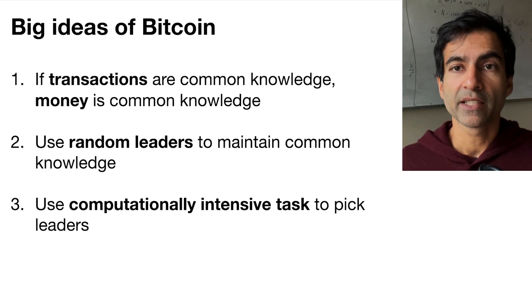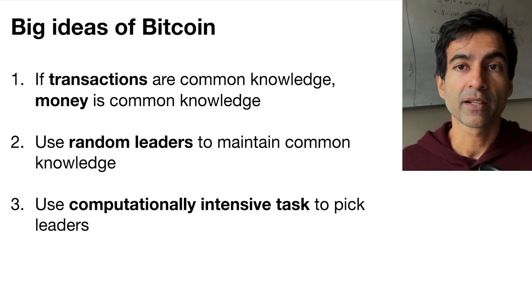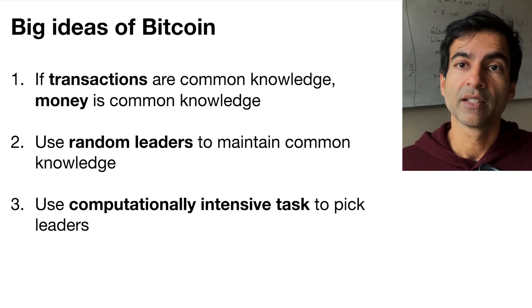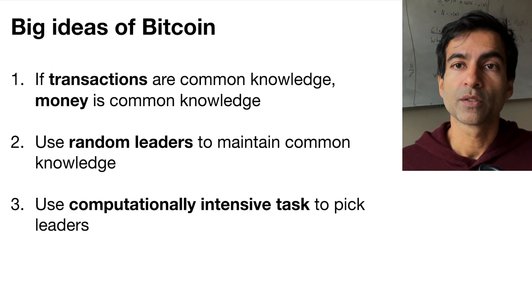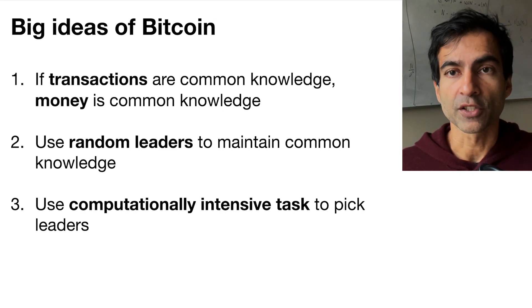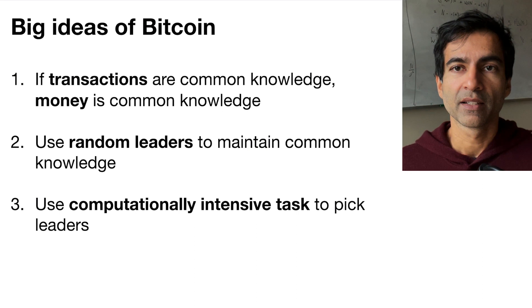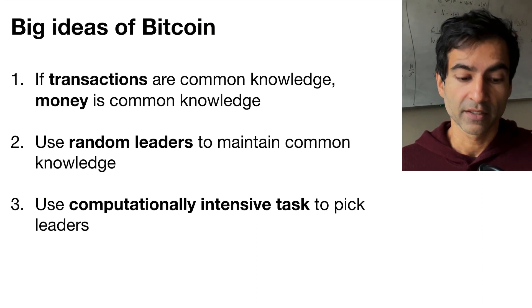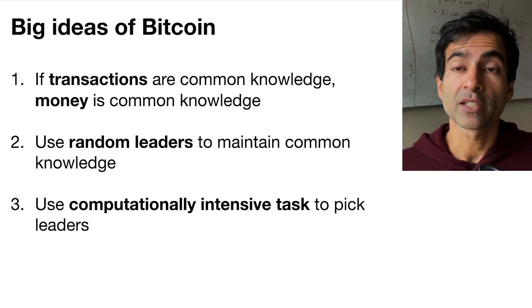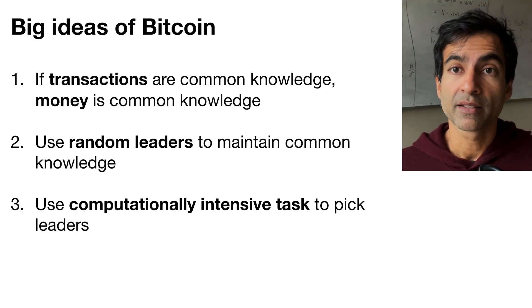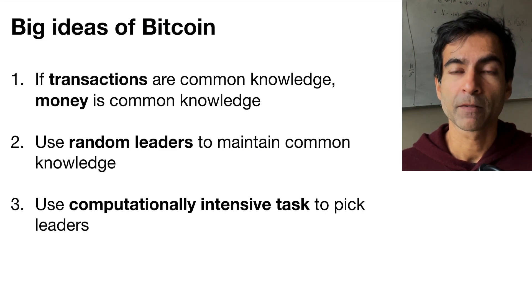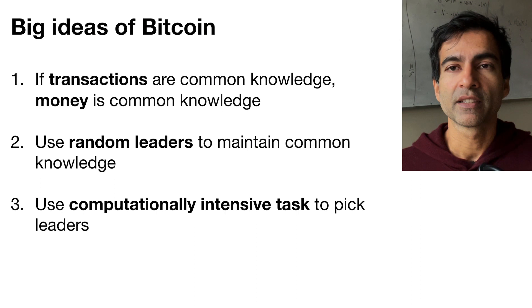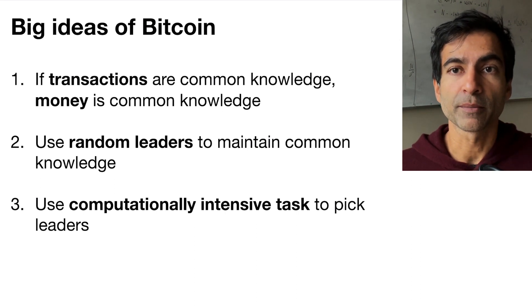The second big idea is you can pick random leaders in the system to maintain this common knowledge of transactions. And the third idea is to use a computationally intensive task to actually pick who will be the next leader. Now I will discuss all of these ideas in turn and explain how they can be put together to make Bitcoin.